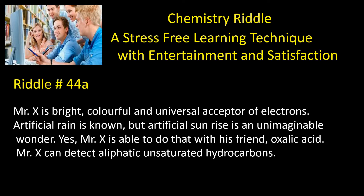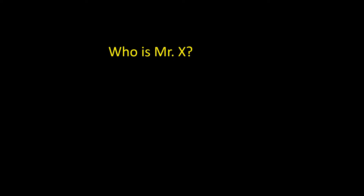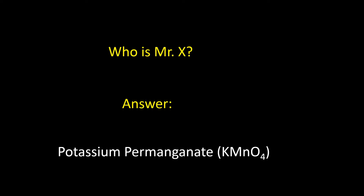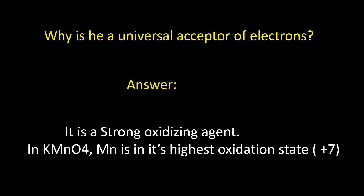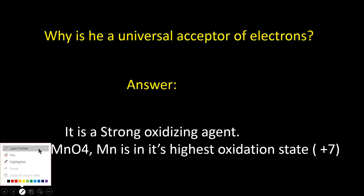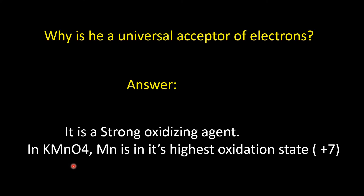First question: who is Mr. X? The answer is potassium permanganate. Second question: why is he a universal acceptor of electrons? The answer is it is a strong oxidizing agent. In potassium permanganate, manganese is in its highest oxidation state, plus 7.